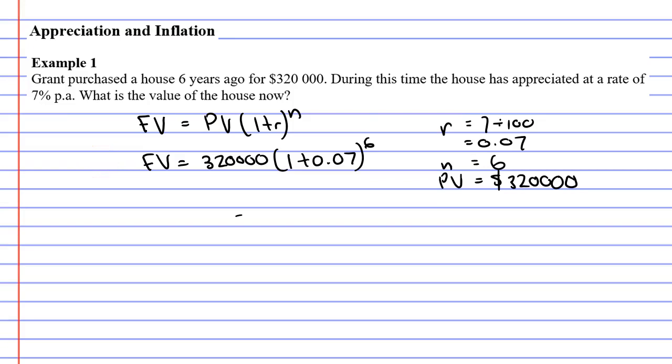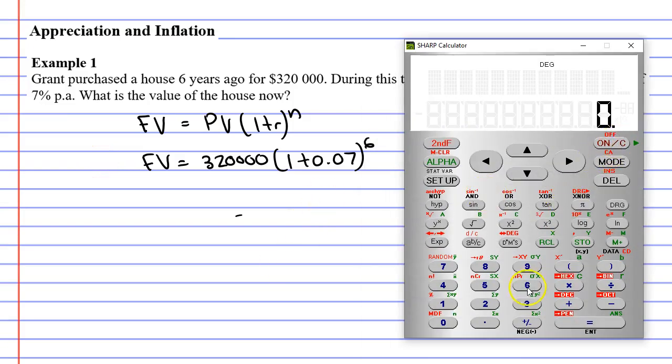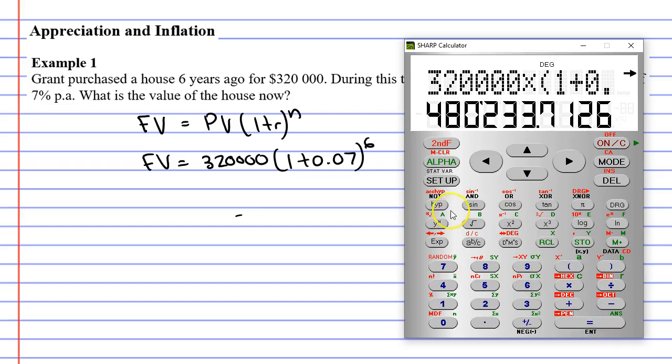So we'll bring up our calculator here. $320,000 times, open the brackets, 1 plus 0.07, close the brackets, to the power of 6, and we get $480,000.